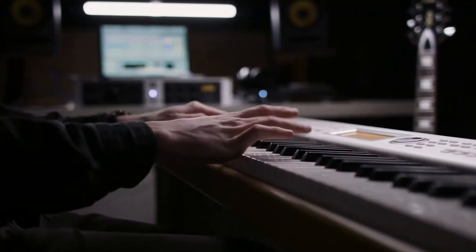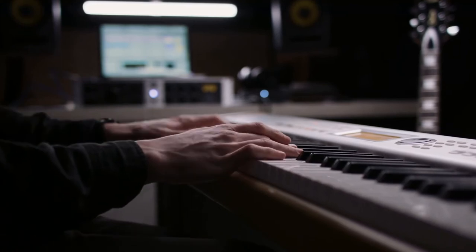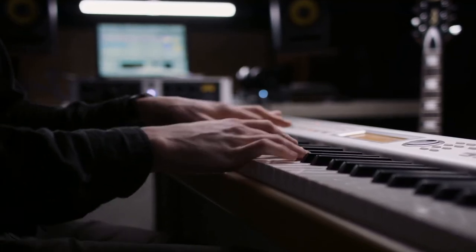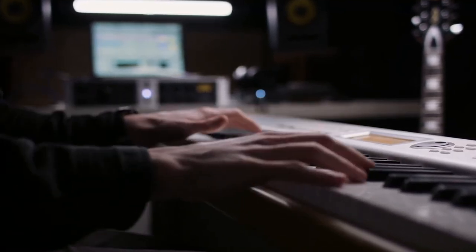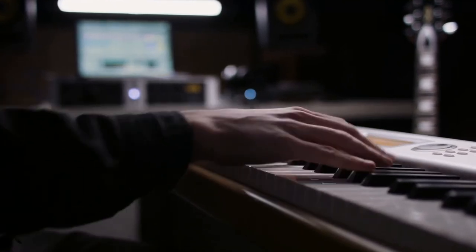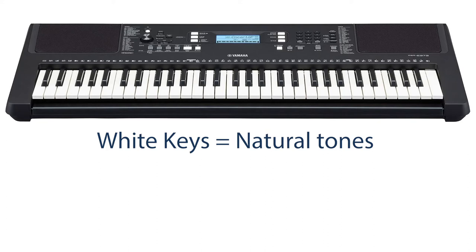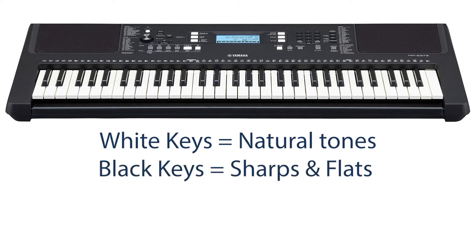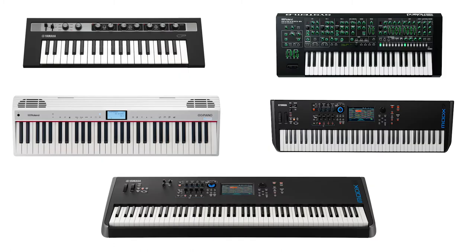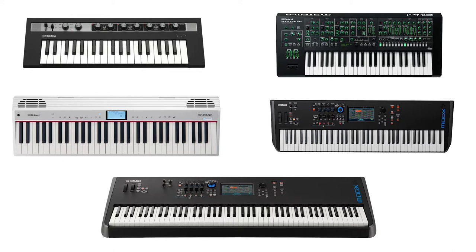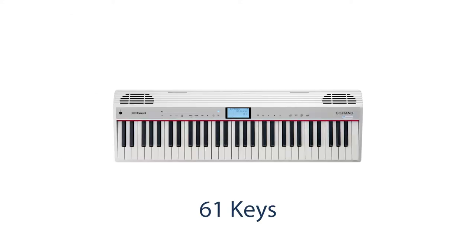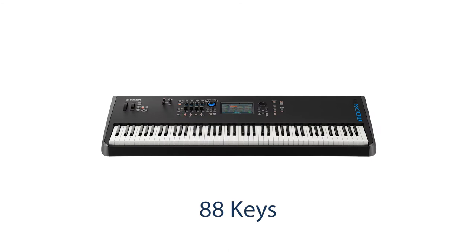Let us begin by looking at what is a keyboard. A keyboard is a musical instrument that a user can play sounds generated by samples or microchips. These sounds are played via keys that resemble those found on a piano, where the white keys represent natural tones and the black keys represent sharps and flats. Keyboards usually come in different shapes and sizes, however the most common key ranges are 37, 49, 61, 76 and 88 keys.